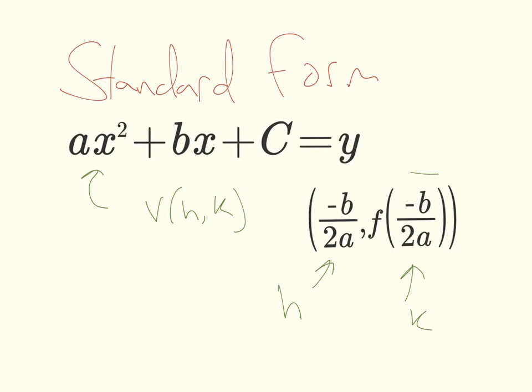And this one, this part right here, the second part for K, that is going to be the function that we're using evaluated when X is negative B over 2A. So I think the easiest way for this to make sense is just for us to do it in practice. So let's try one on our own.